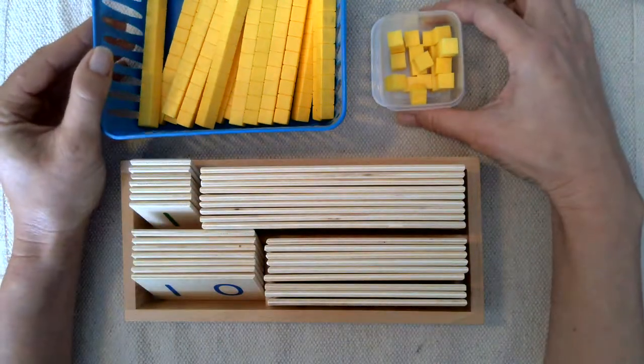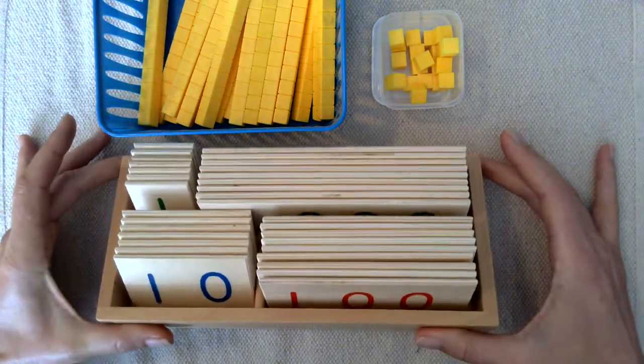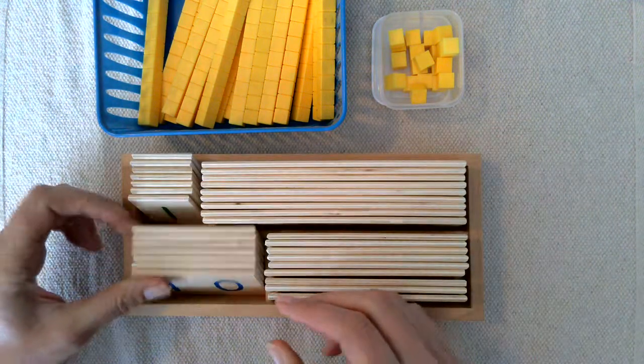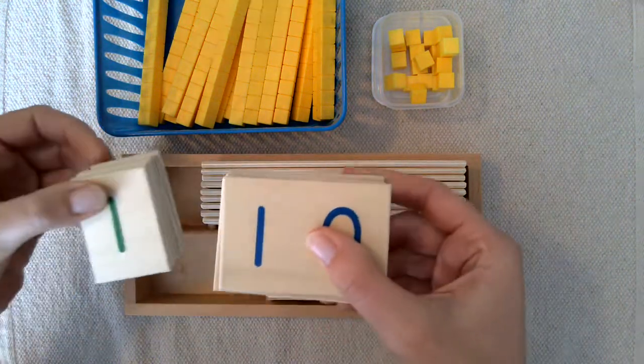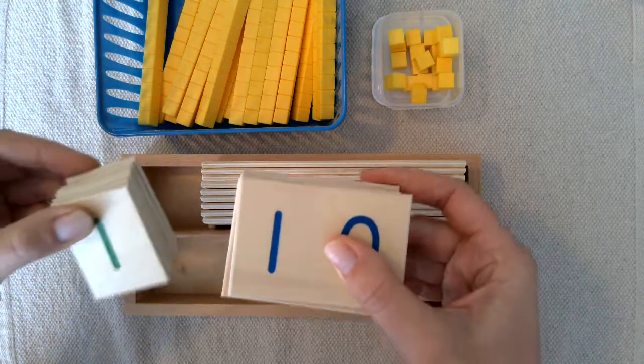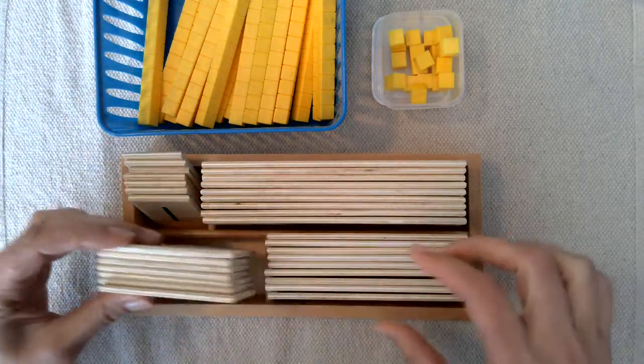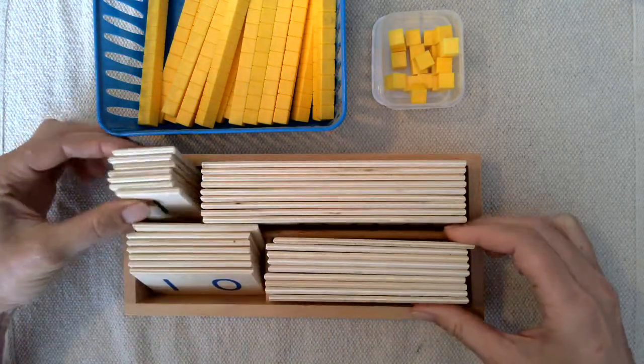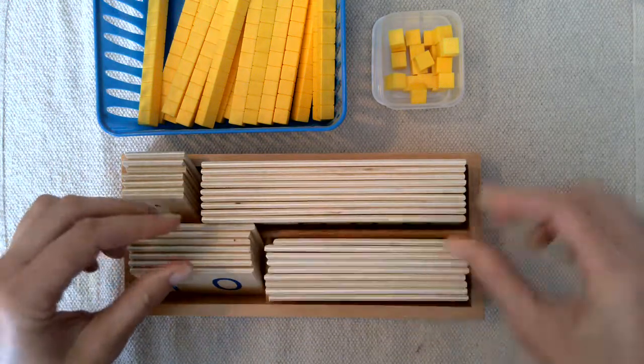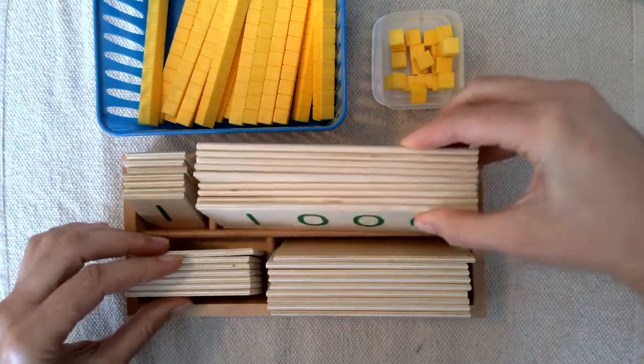So I have here base 10 blocks and some small number cards. We are only going to be using ones and tens, and you can easily differentiate this by going up to hundreds or thousands.